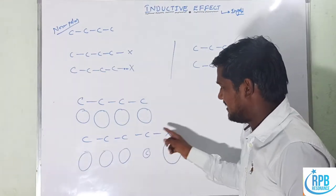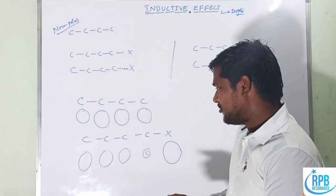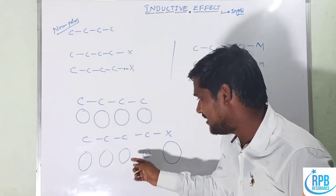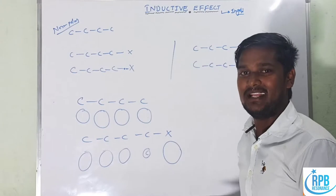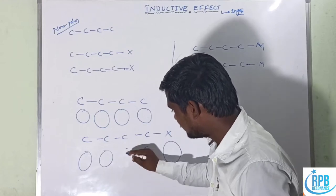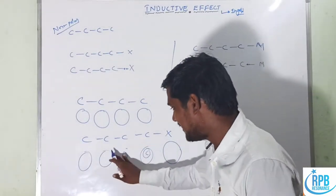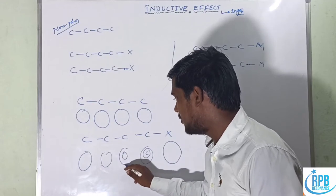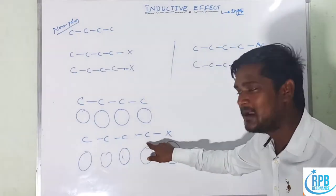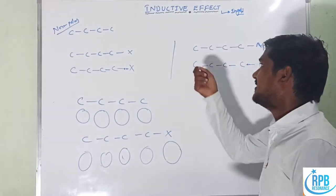The halogen group X, which is like X-minus, affects the first carbon. Here it creates a less electronegative cloud. The remaining carbons, having a helping nature, donate their electronic cloud towards the less electronegative atom. So the second atom, which acquires less electronic cloud, causes the third atom to donate its electronic cloud towards the second atom.